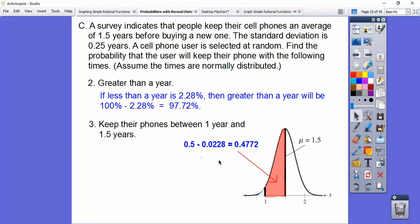So we do 0.5 because the whole half of a curve is 0.5, and then we subtract off this little piece right here, and that's going to give us this little guy right here. So about 47.72% of the people will keep their phones between 1 year and 1.5 years.